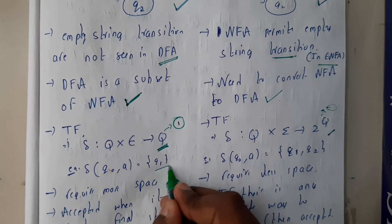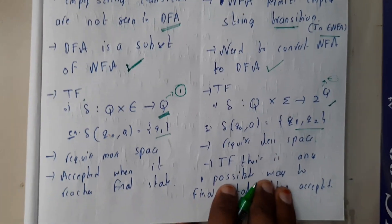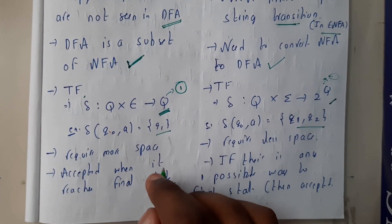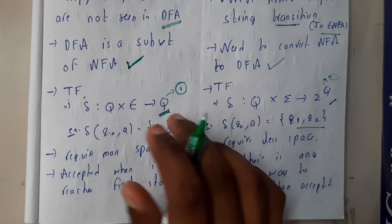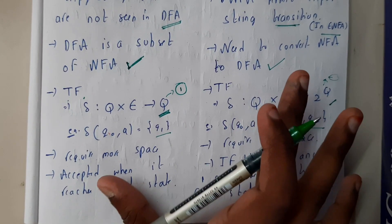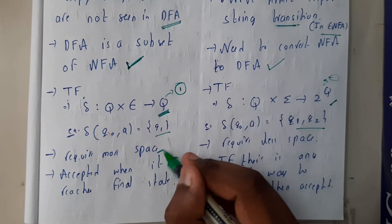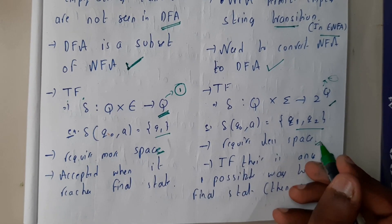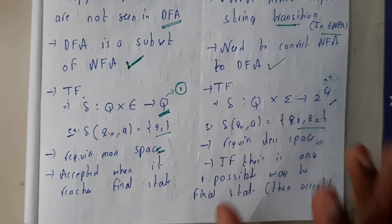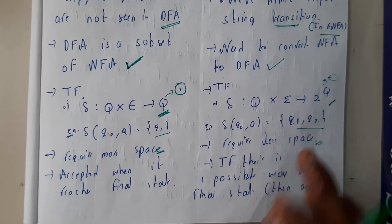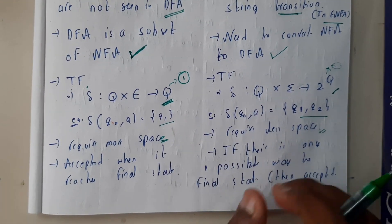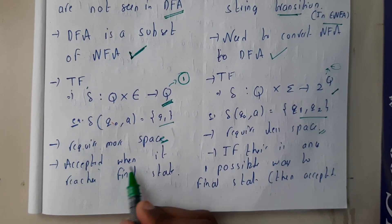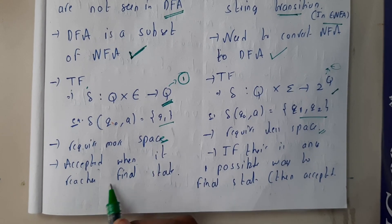Let us take a small example and see — single state versus double state. For DFA, if there is a big complex problem it requires more space, whereas for NFA you'll be having many states, so it will be really simple for complex problems and takes much less space.